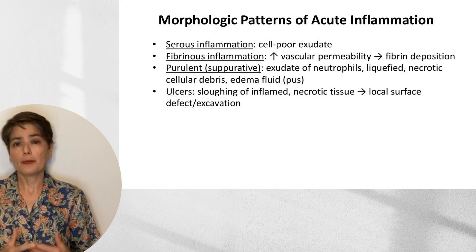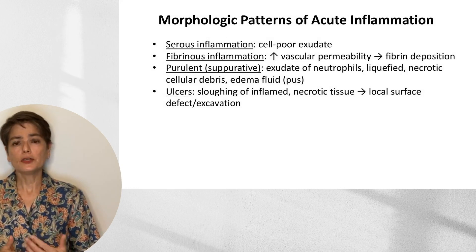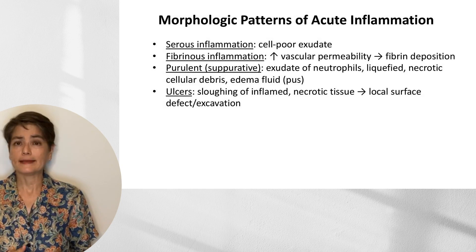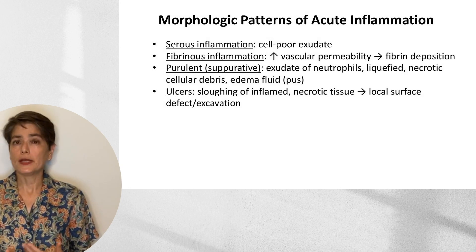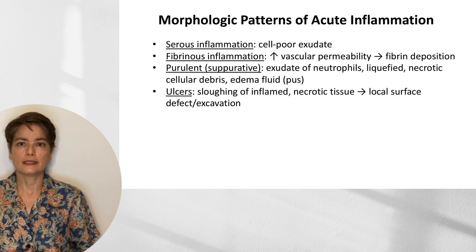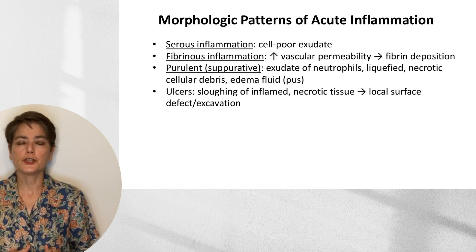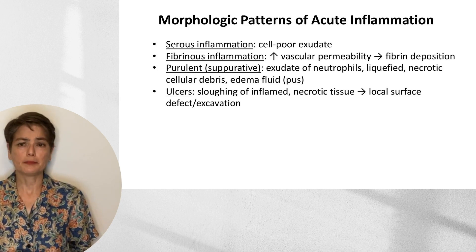These are the patterns we'll be examining. Serous inflammation, which is characterized by a cell-poor exudate. Fibrinous inflammation, which is due to increased vascular permeability, which allows fibrinogen to leak into the extravascular tissue, and then we get subsequent fibrin deposition.